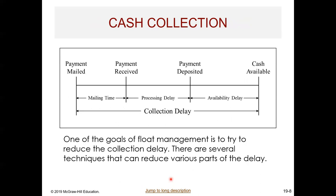Here is a diagram of the cash collection process. One of the goals of float management is to reduce the collection delay. The payment is mailed, then there's mailing time, then the payment is received, then it takes time to process internally, then the payment is deposited in the bank, and then it takes time from deposit until the cash is available for use or to earn interest. Our goal as management is to reduce the time. There are several techniques that can reduce various parts of this delay — whether the mailing time, the processing delay, or the availability delay.